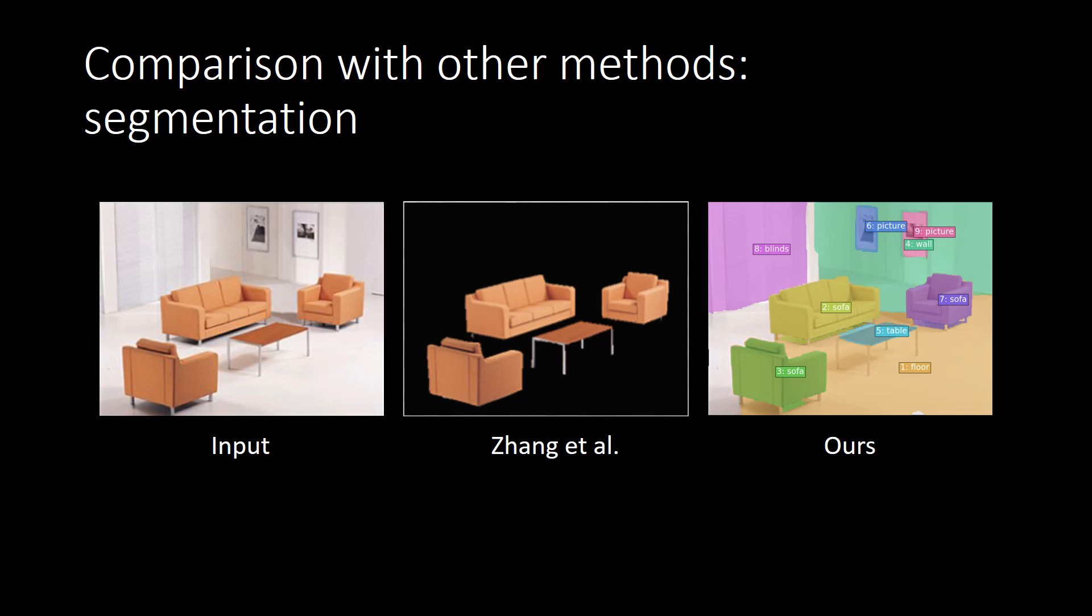We compare our method with others in two aspects. In image segmentation, from these results, we can see that our fully convolutional network can detect more pieces, like the blinds and the picture on the wall.